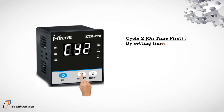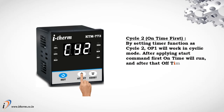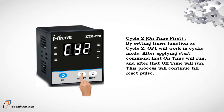Cycle 2, on time first. By setting timer function as cycle 2, output 1 will work in cyclic mode. After applying start command, first on time will run and after that off time will run. This process will continue till reset pulse.